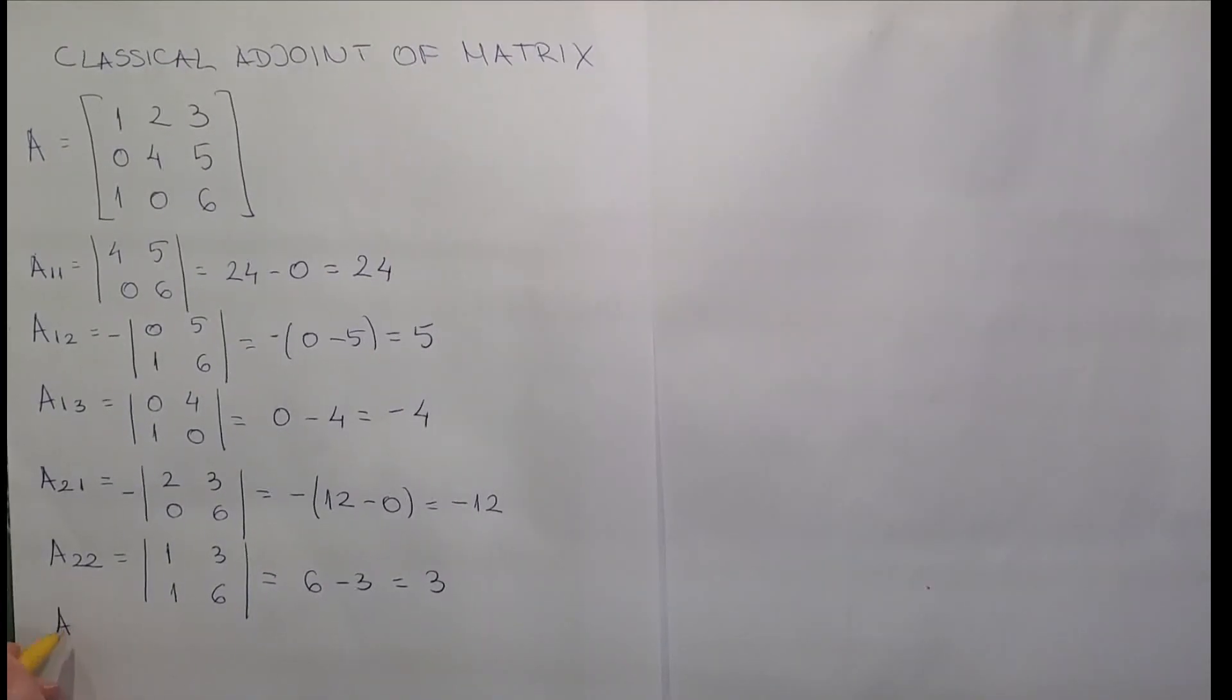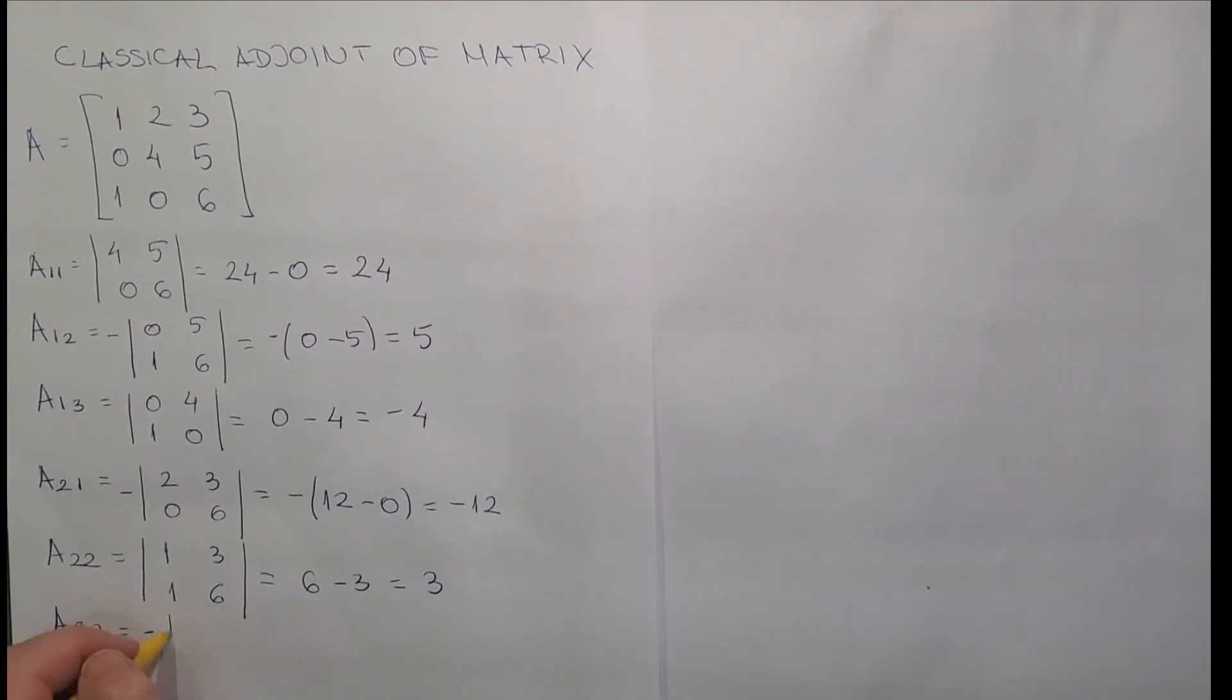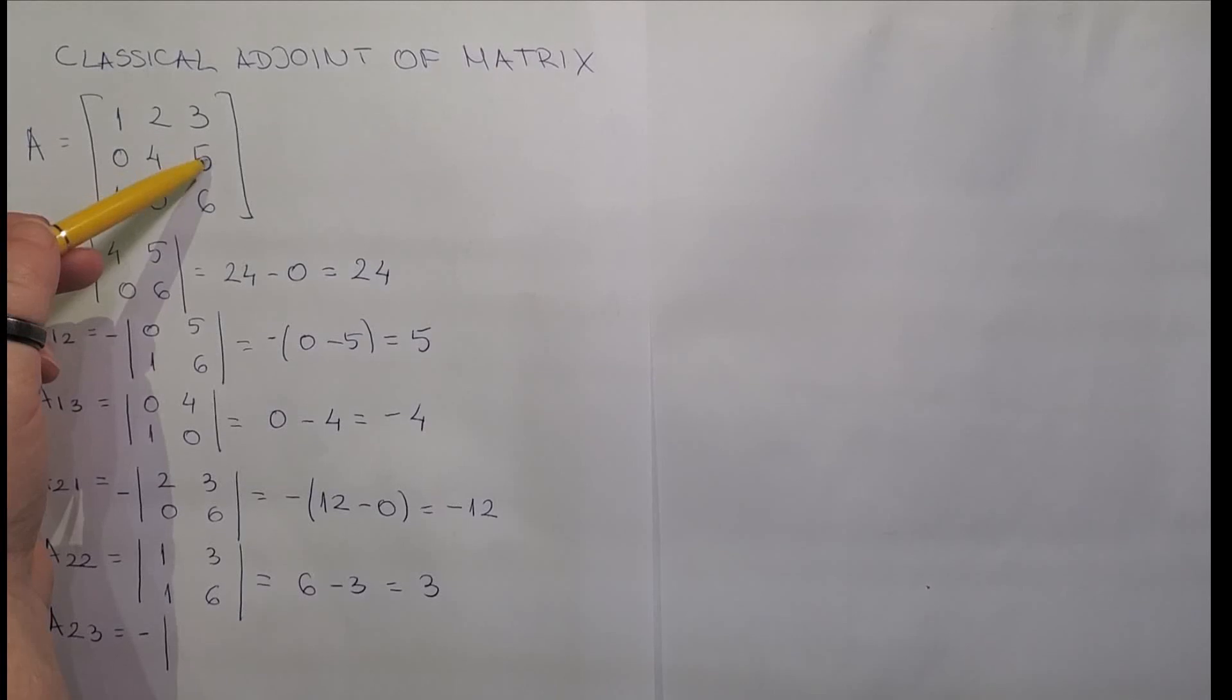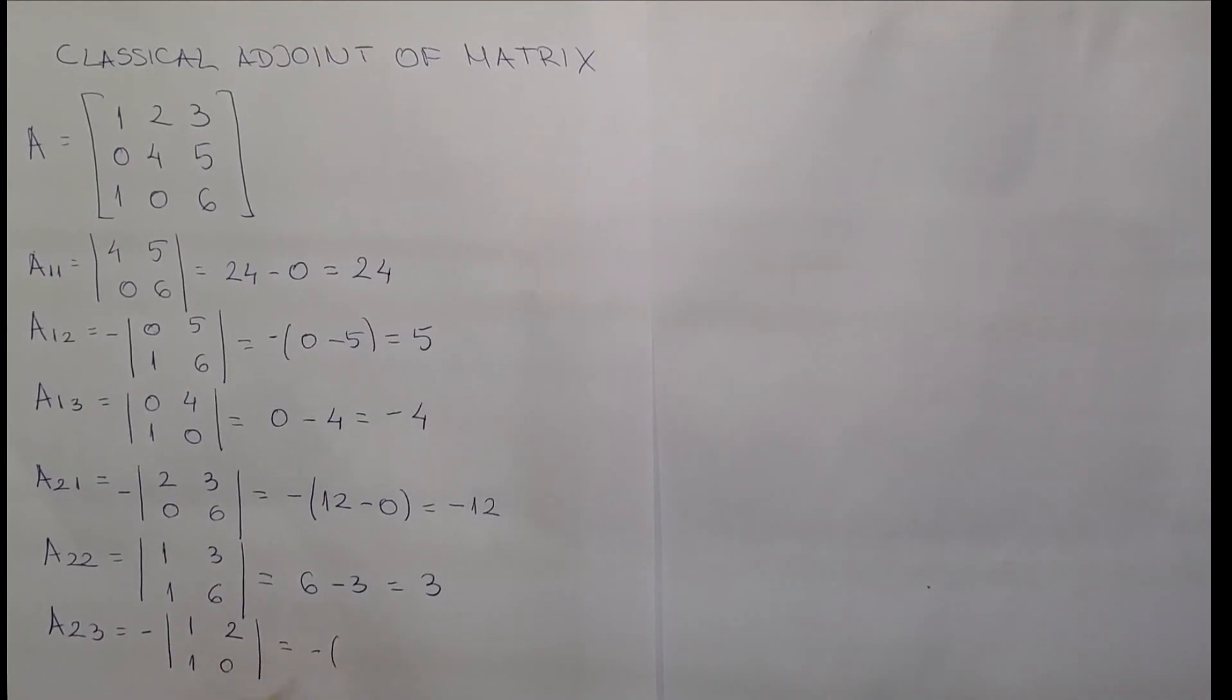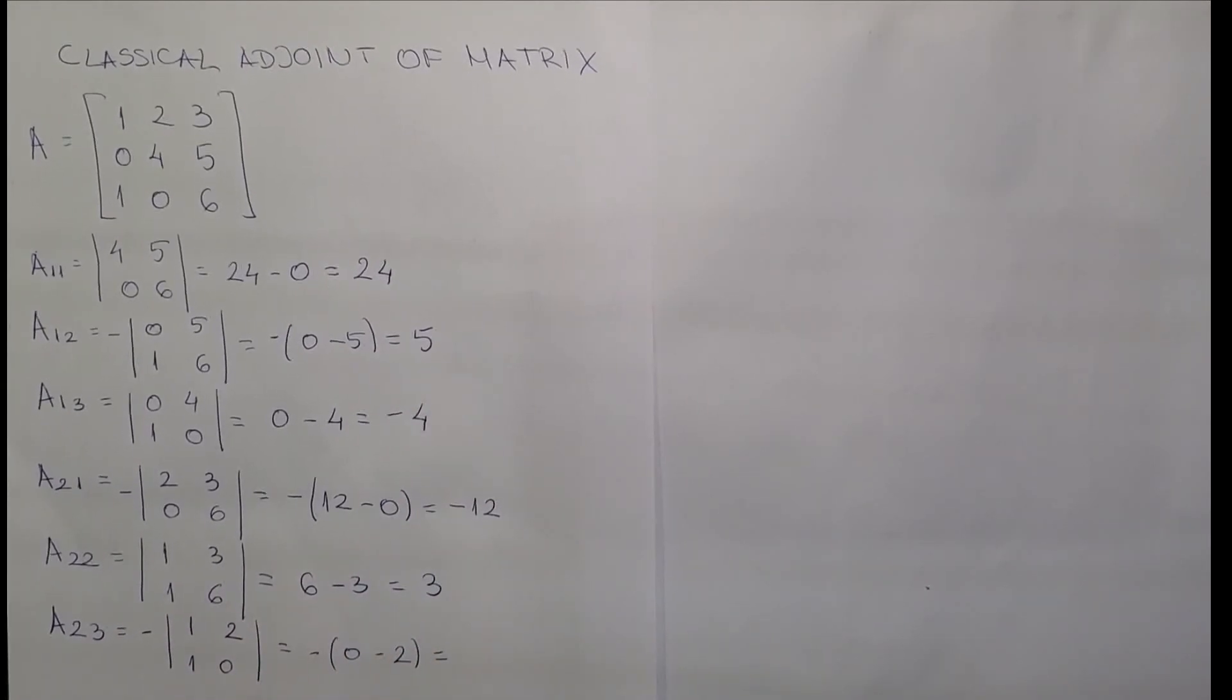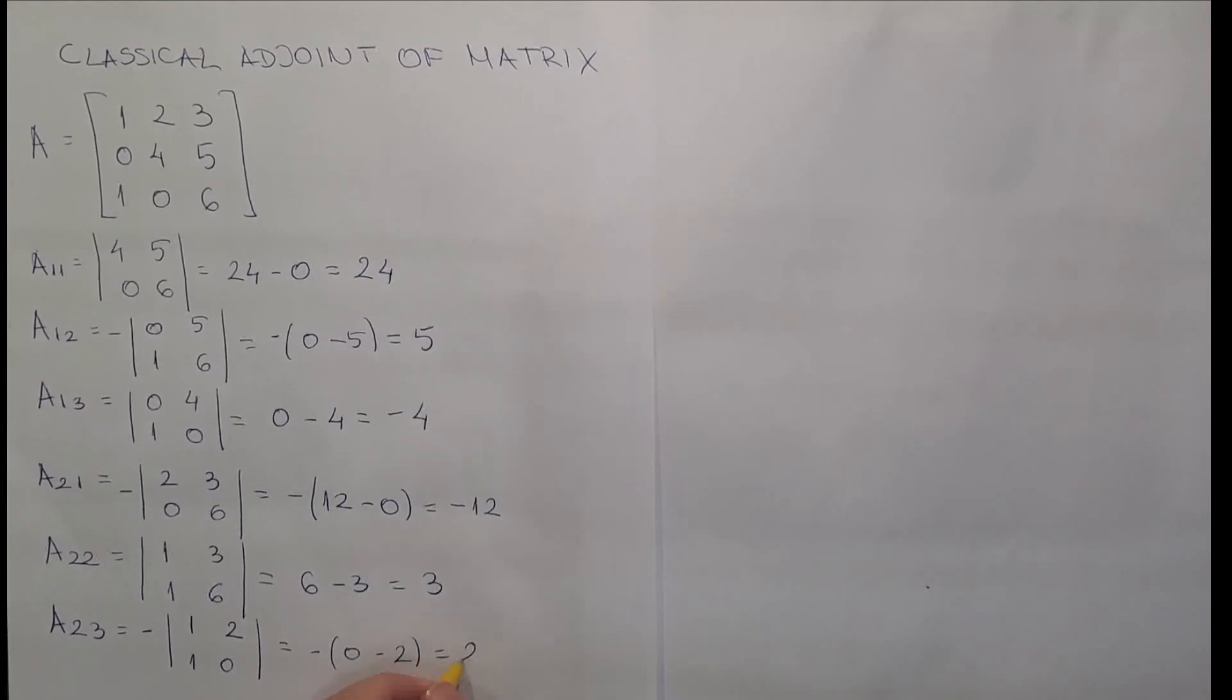The third one of this series is a23. a23 starts with the minus sign. So we are eliminating row number 2 and column number 3. So we have 1, 2, 1, 0. This one is equal to minus 0, minus 2. So a23 is equal to 2.